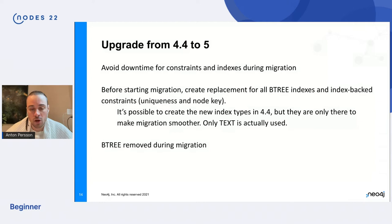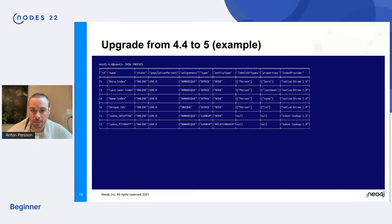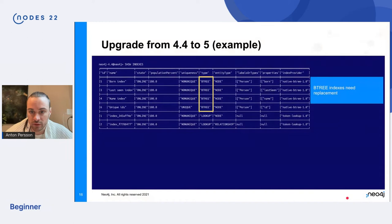Okay. So once you have replaced your Btree indexes and Btree backed constraints, you will be ready for the to do the actual migration. And during that migration, the Btree indexes will be removed automatically. So let's step through a simple example of what this might look like.